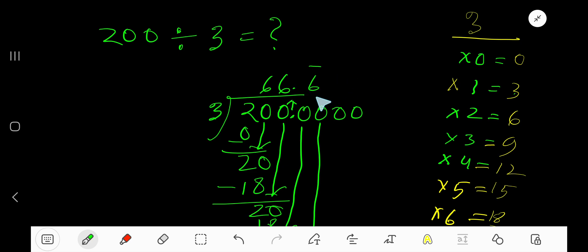So our answer is 66.6 bar. This bar means this 6 is repeating.